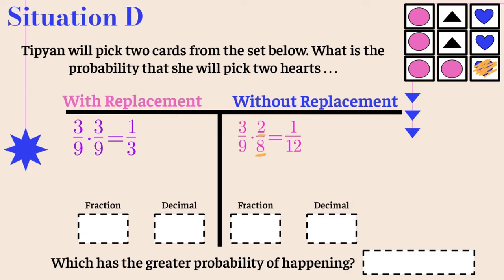Now let's compare. The fraction for with replacement is one third, which as a decimal is 0.3 repeating. The fraction for without replacement is one twelfth, which as a decimal is 0.083. Since 0.3 is much larger than 0.083, with replacement has the greater probability of happening.